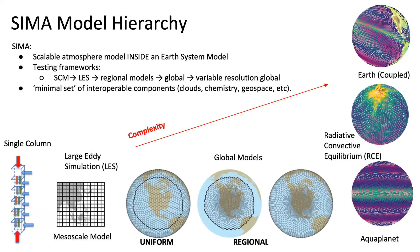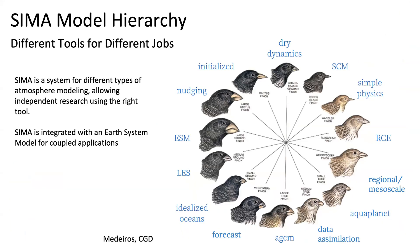SEMA is a model hierarchy — envisioned as scalable so you can configure all sorts of models from it. Everything from single column and large eddy simulations up to uniform global GCMs or regional models with refined mesh, in addition to just general uniform meshes, and refined mesh global atmosphere models. You could have a global model as an aqua planet with no land, idealized radiative-convective equilibrium experiments, or a fully coupled earth system model with realistic topography. The goal with SEMA is to produce the right tool for the right job — a system of all different types of atmospheric modeling, integrated with an earth system model with standard configurations like a community atmosphere model or a regional mesoscale model like WARF or MPAS.